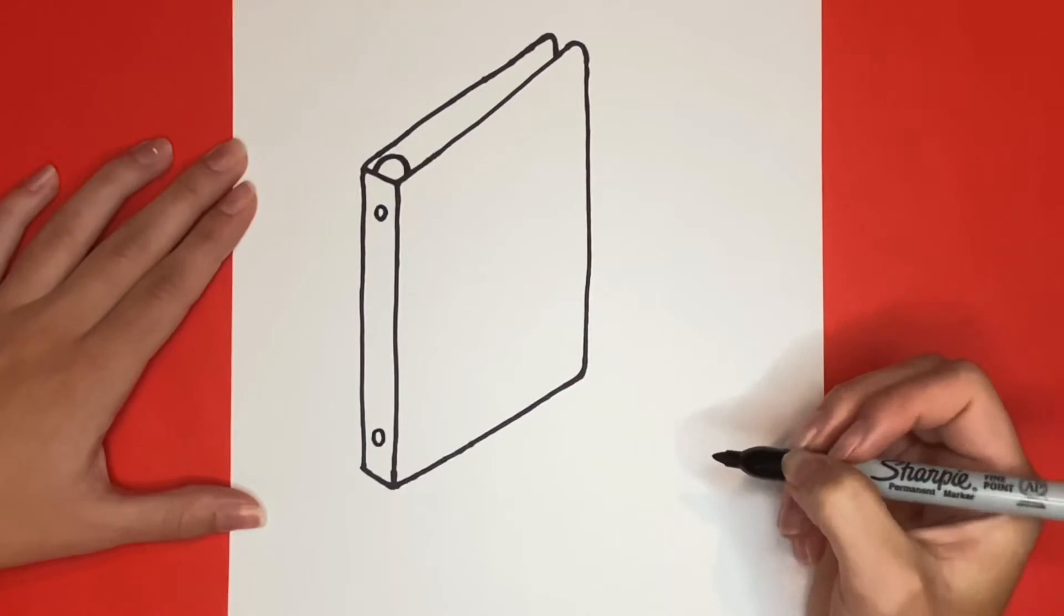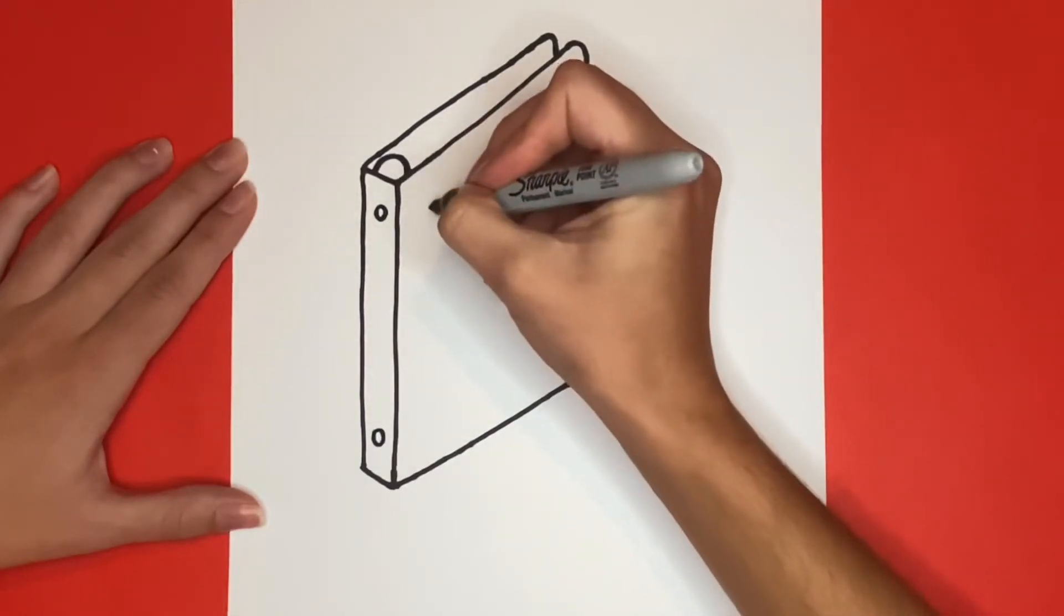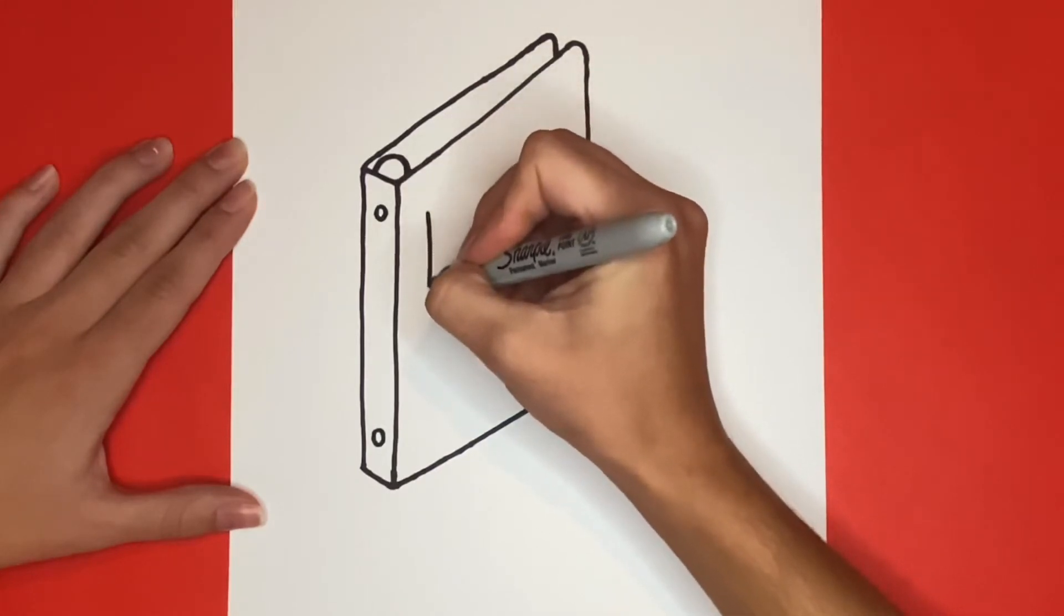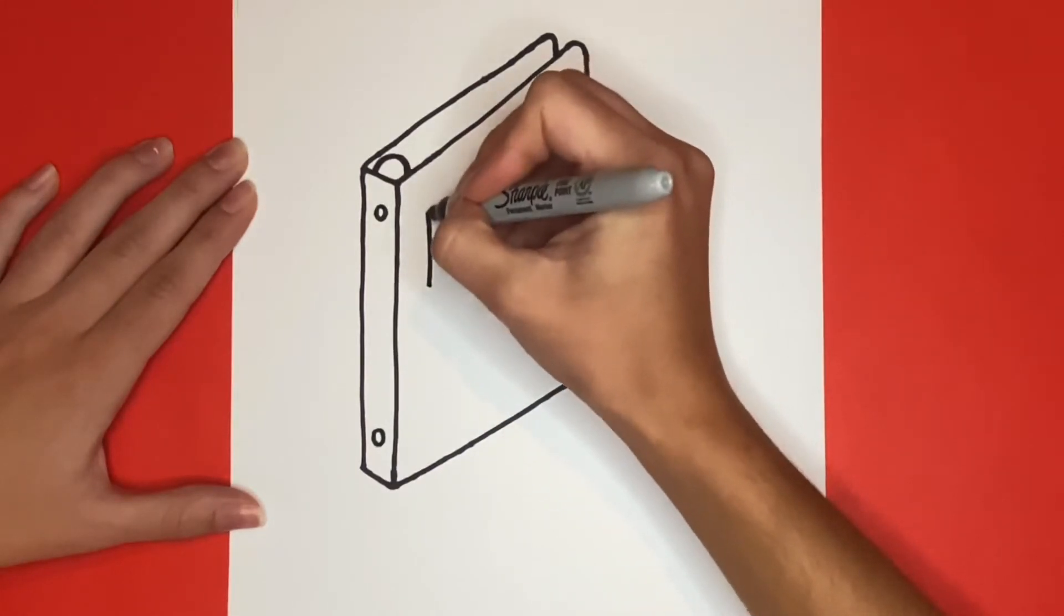Then we're going to draw a rectangle on the front of our binder. This is where you can put your name or the subject name of your class, or if you would like you can leave it blank.